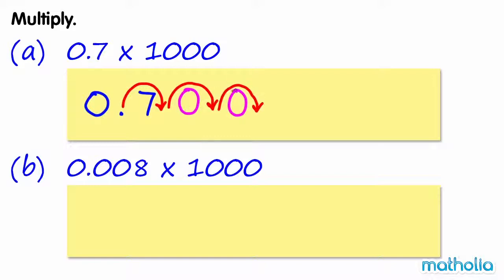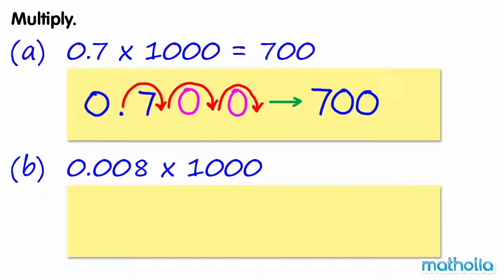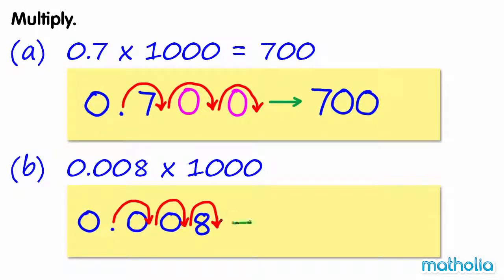Multiply 0.7 times 1000. We can multiply by 1000 by shifting the decimal point three places to the right. 0.7 becomes 700, so 0.7 times 1000 equals 700. For 0.008 times 1000, shifting the decimal point three places to the right gives 8, so 0.008 times 1000 equals 8.